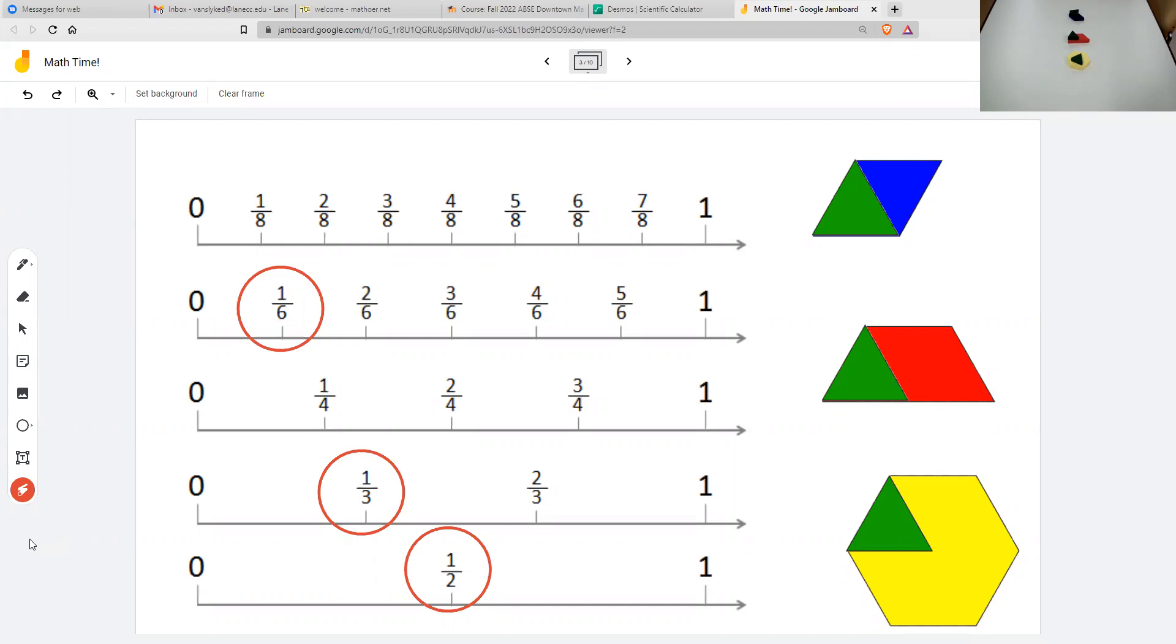On the number lines, it looks like one half is bigger than one third, and one third is bigger than one sixth. And this makes sense to the kindergartner, because if they were to take, say, a pancake and draw on it...